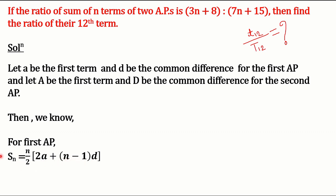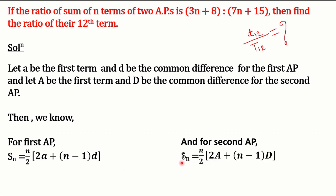Sn represents the sum of first n terms. And again for the second AP, Sn is given by the same formula — the only difference is we have used slightly different symbols. This also represents the sum of n terms of any AP, and in this case we have used capital A and capital D as per our supposition.